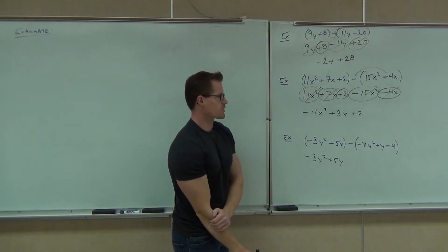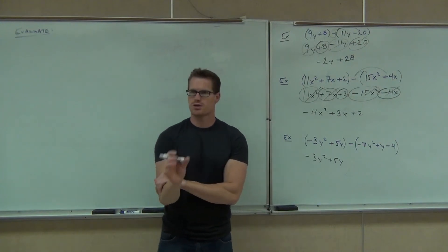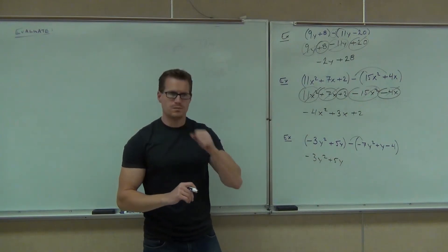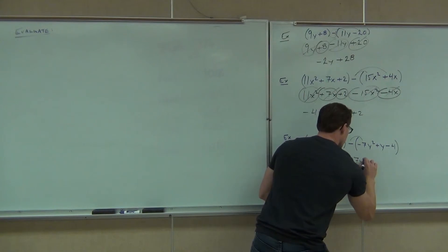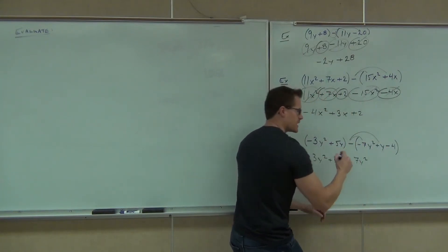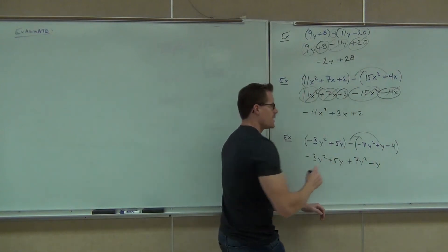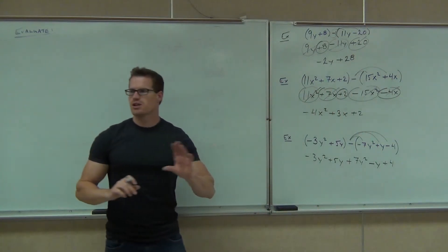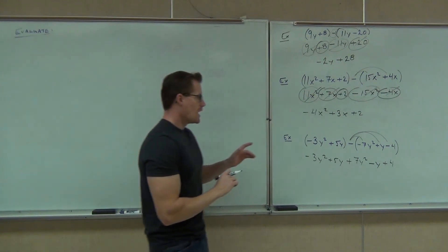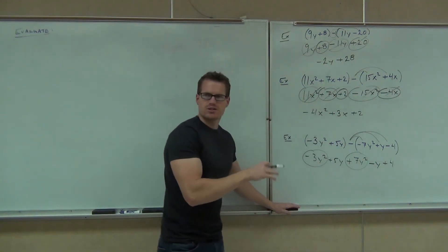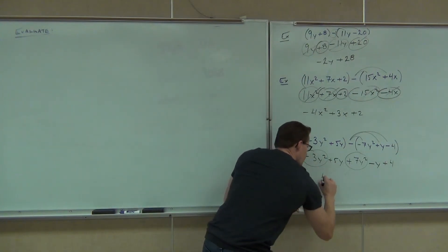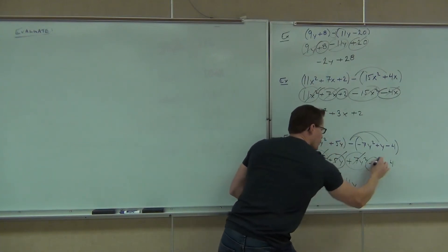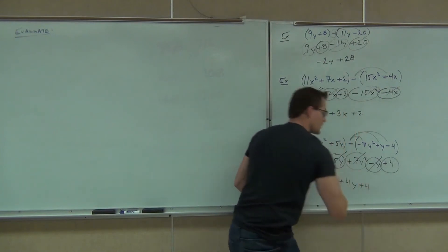Alright, last one — kind of tricky. We've got a couple of signs right next to each other. Just stick with it, go term by term. We know negative times a negative gives us a positive, so we write plus. Negative times a positive gives us a negative, so we write minus. And negative times a negative again gives us plus, so we write plus. That's how you change every one of those signs. After that, combine like terms — make sure it's as simple as possible. We've got 4y squared, 4y, and plus 4.